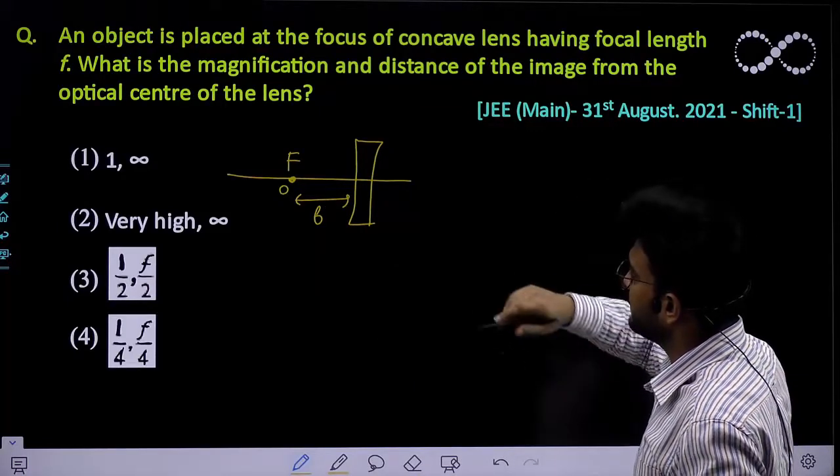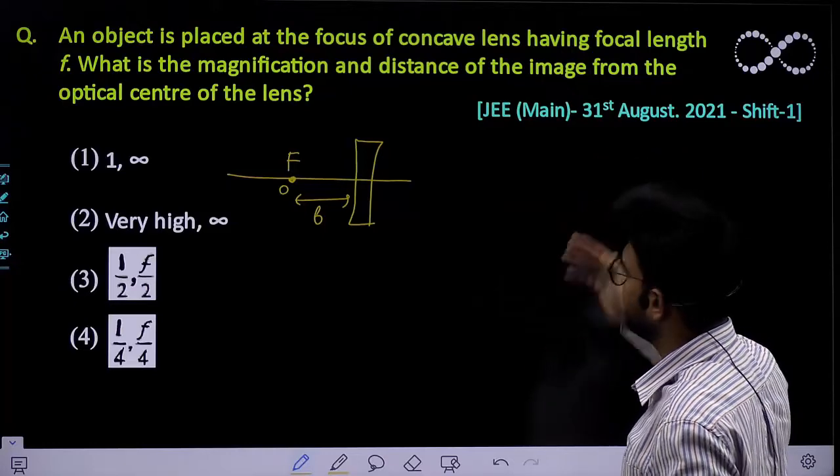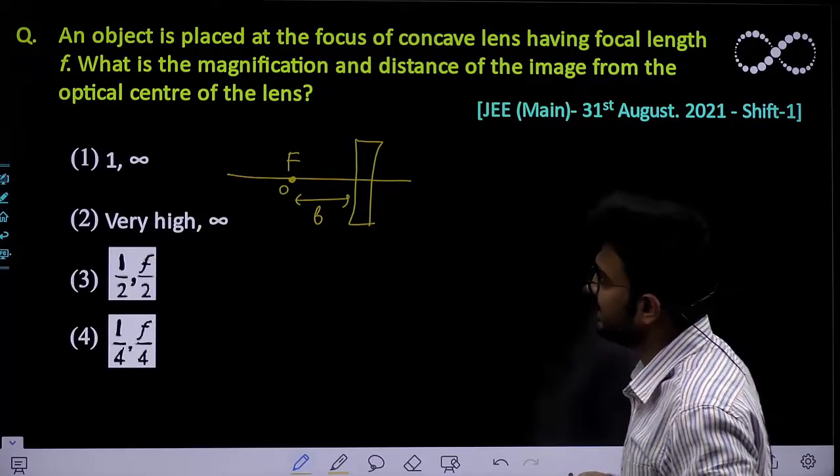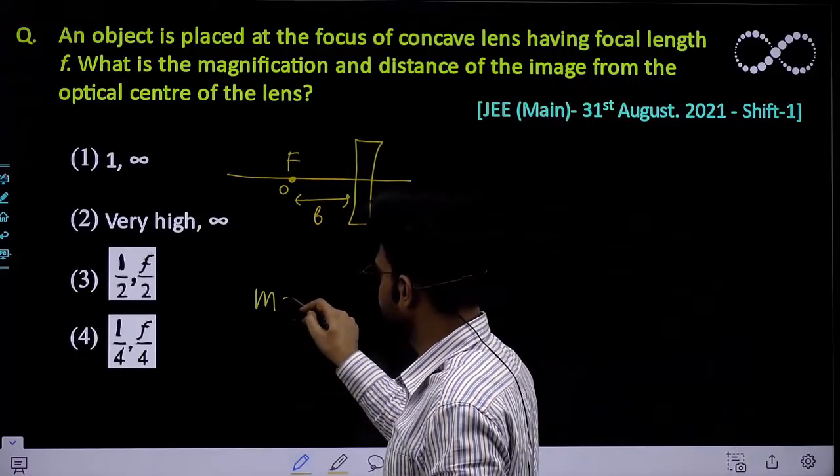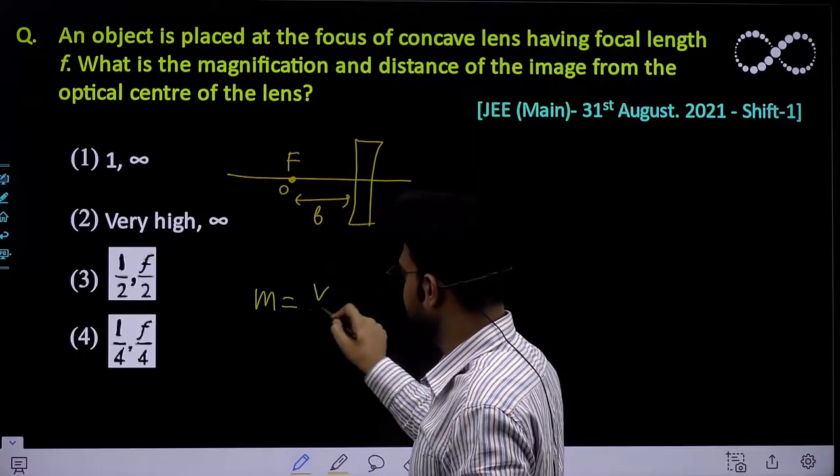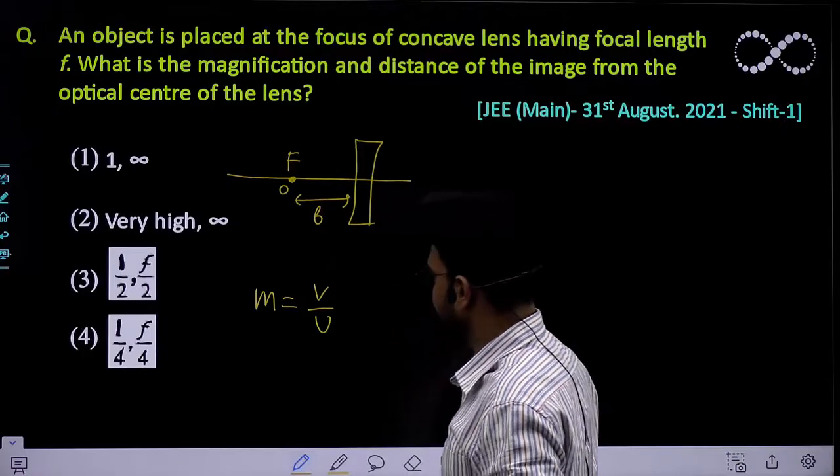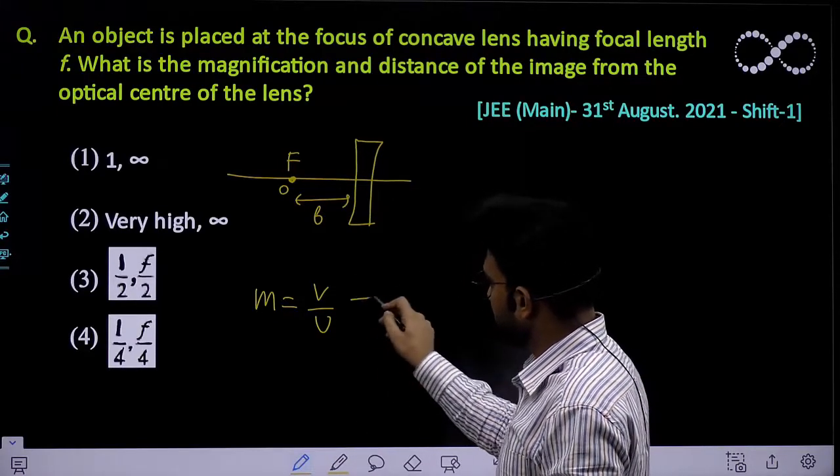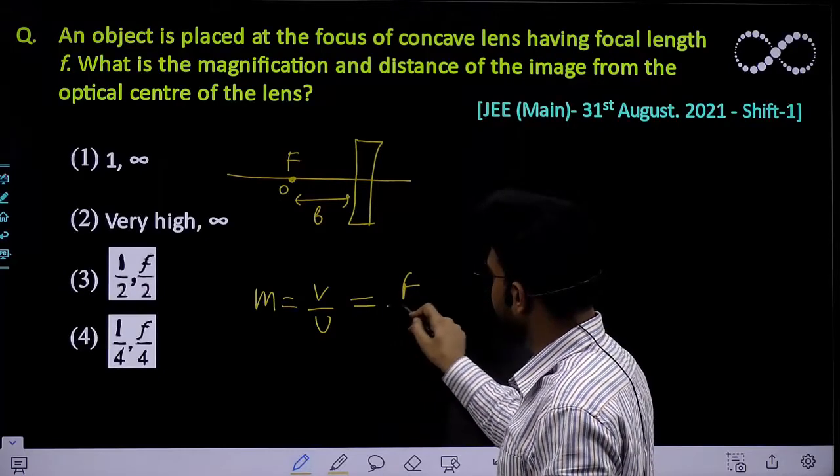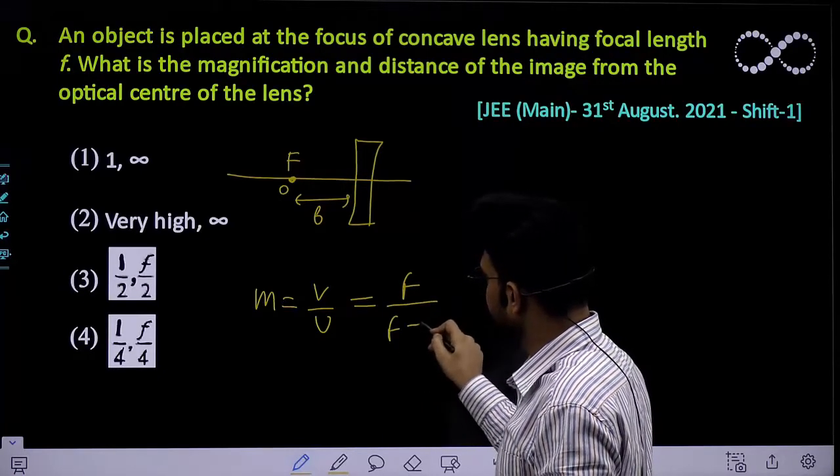We need to find the magnification and the distance of the image from the optical center. We know that magnification for a lens is given by m = v/u, which also equals f/(f+u).